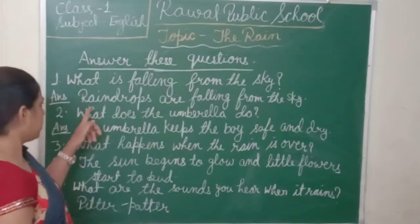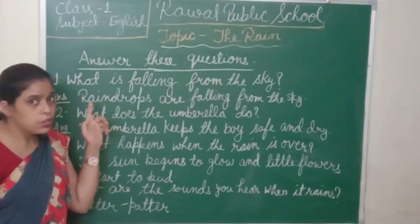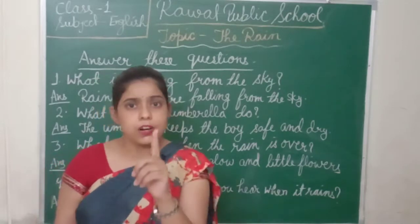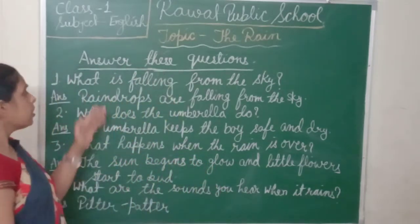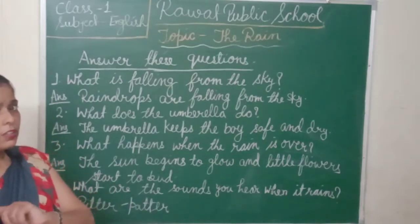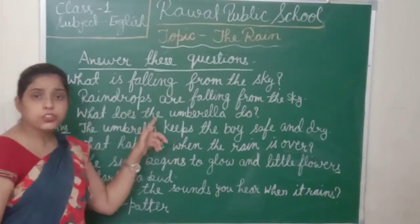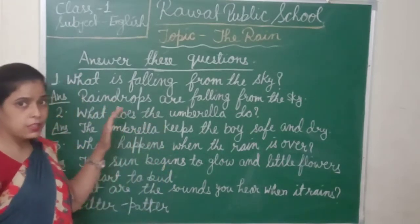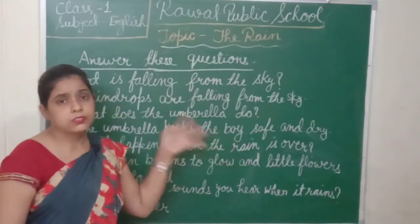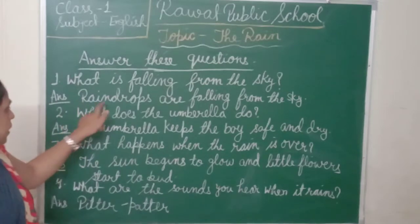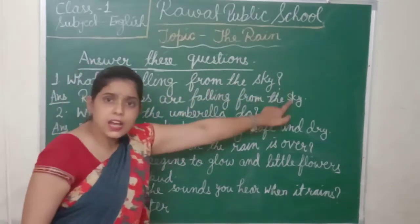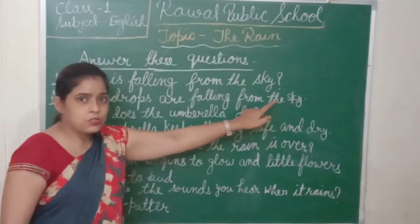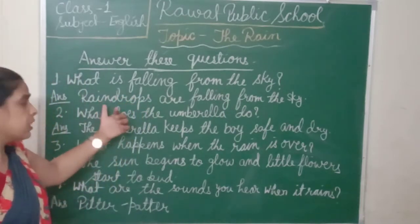Look here students — what you need to learn is only one word for this answer. That word is 'raindrops.' If you remember raindrops, then you have already learnt this answer. So raindrops are falling from the sky. You need to learn the spelling of raindrops.